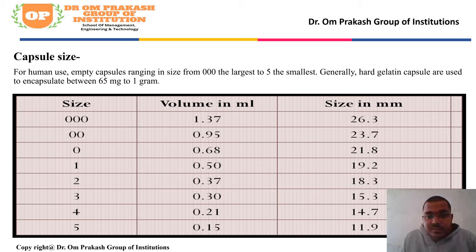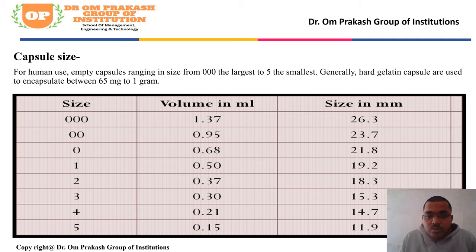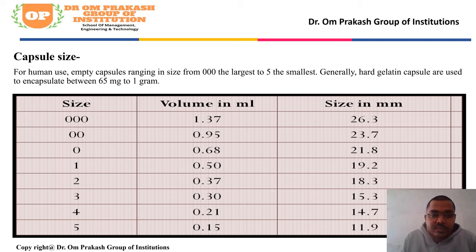The sizes in millimeters for capsule sizes 000 through 5 are: 26.3, 23.7, 21.8, 19.2, 18.3, 15.3, 14.7, and 11.9. You can see from the table what the smallest and largest sizes are.